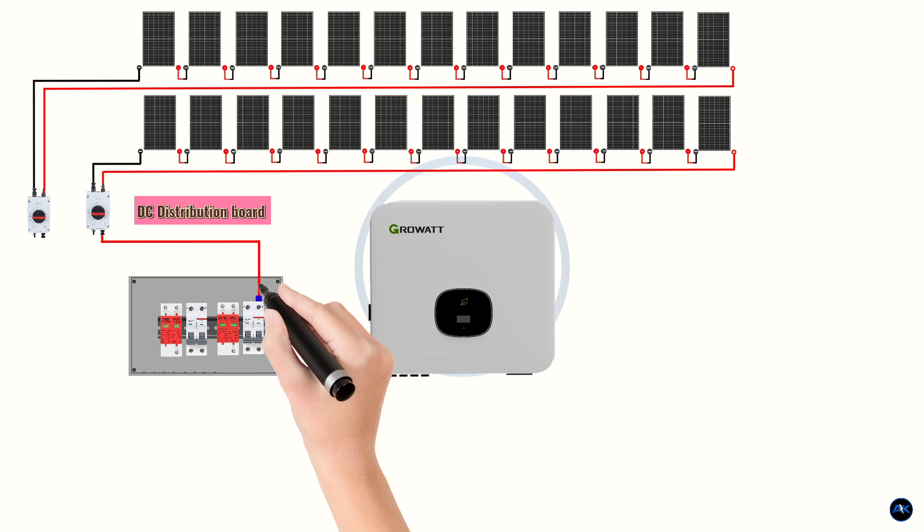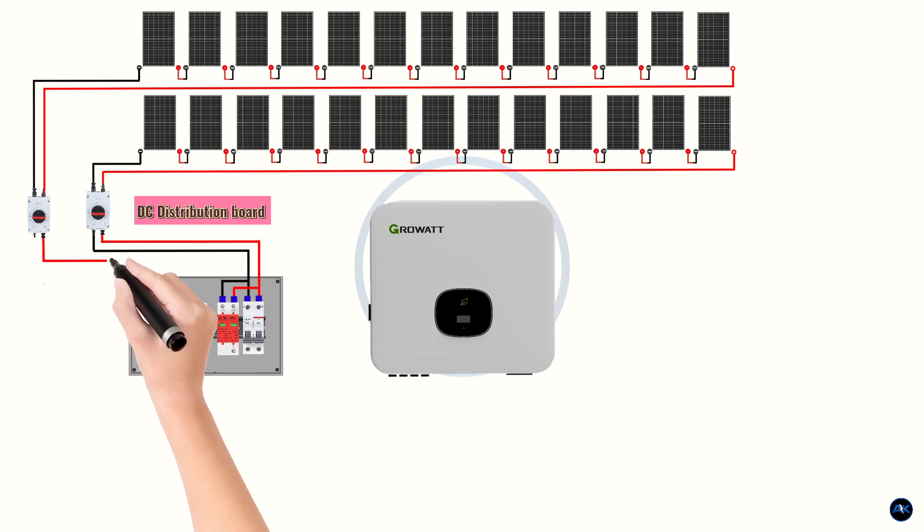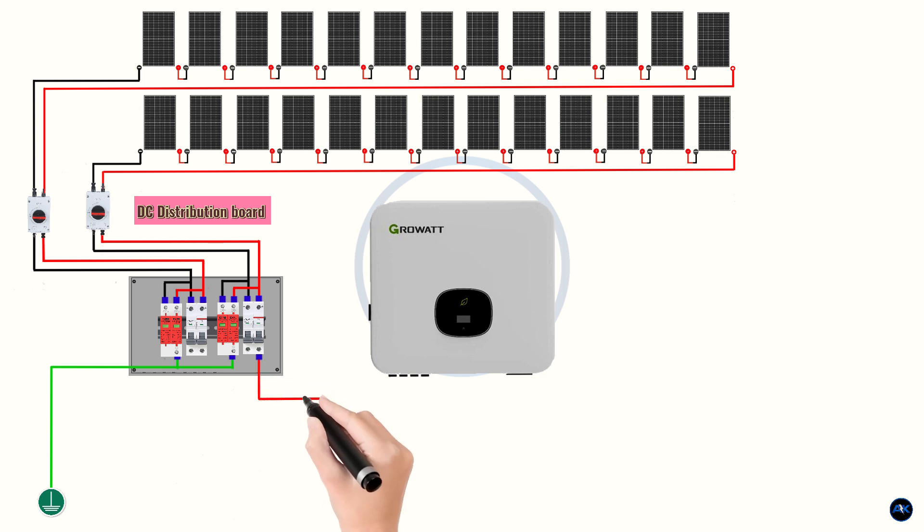Isolator switch to MCB connection: connect the positive output of the isolator switch to the positive input of the DC MCB. Connect the negative output of the isolator switch to the negative input of the DC MCB. SPD connection parallel to MCB. Positive connection: connect a wire from the positive output terminal of the MCB to the positive terminal of the SPD. Negative connection: connect the wires from the negative output terminal of the MCB to the negative terminal of the SPD. If the SPD has a common negative, connect it to the negative output of the MCB. Earth connection: connect the earth terminal of the SPD to the grounding system, earth bar, or designated grounding point. MCB output to inverter: connect the positive output of the MCB to the positive PV input of the solar inverter. Connect the negative output of the MCB to the negative PV input of the solar inverter.